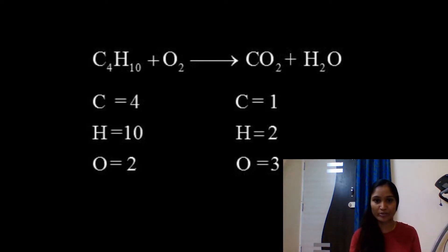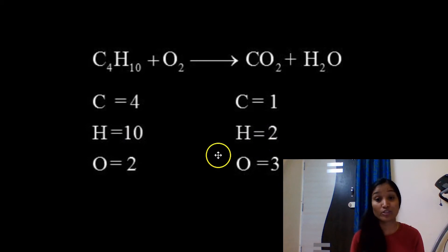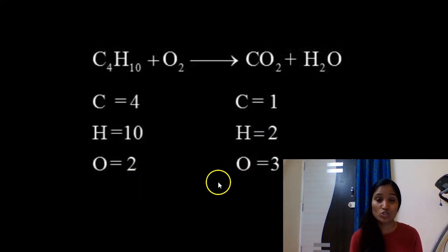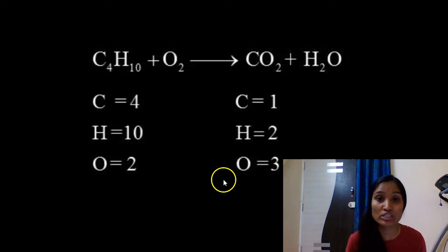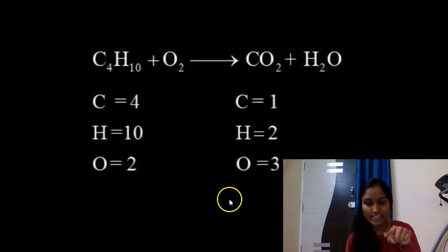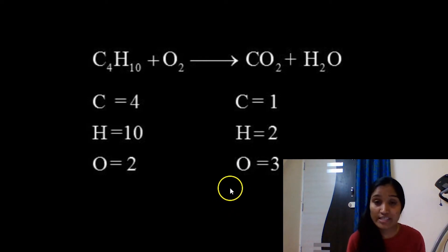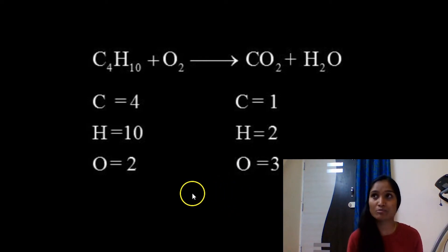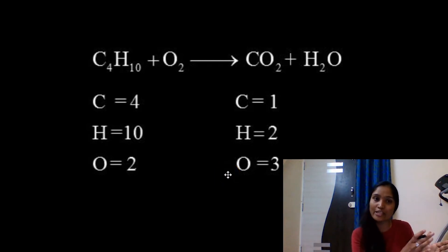Observe the number of atoms on both sides: 4 carbons vs. 1 carbon — not equal; 10 hydrogens vs. 2 hydrogens; 2 oxygens vs. 3 oxygens — never equal. So what kind of chemical equation do you call this? You call it a skeletal equation — one in which the left-hand side atoms are not equal to the right-hand side atoms.